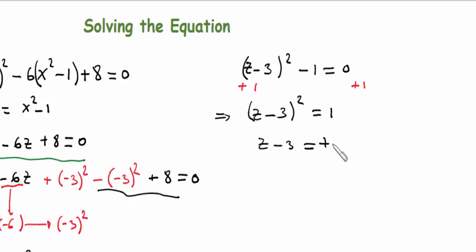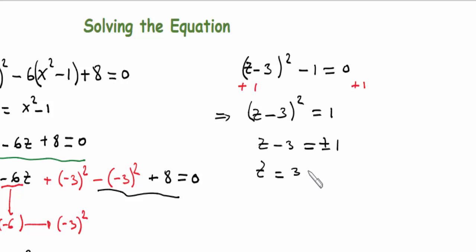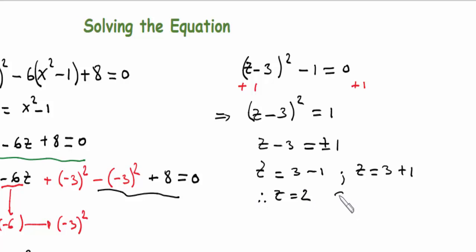Passing minus 3 to the other side gives us two solutions: z equals 3 minus 1, which is z equals 2, and z equals 3 plus 1, which is z equals 4.